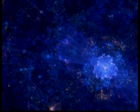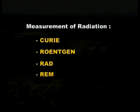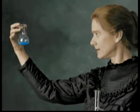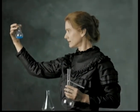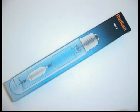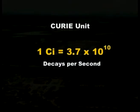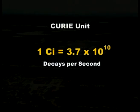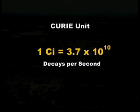Radiations are measured with different units like Curie, Roentgen, RAD, and REM. Curie is the most commonly used unit, named after Madam Curie who discovered radium. It is defined as the quantity of any radioactive material that gives 3.70 × 10^10 disintegrations per second. This unit was defined so that 1 gram of natural radium together with its decay products amounted to 1 Curie.